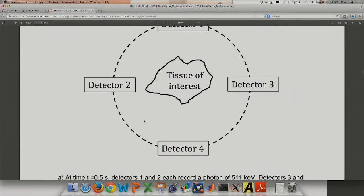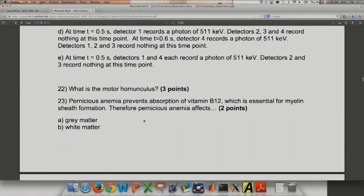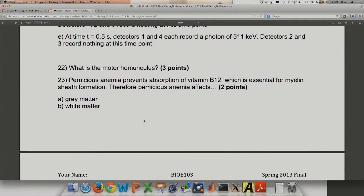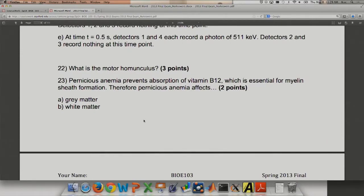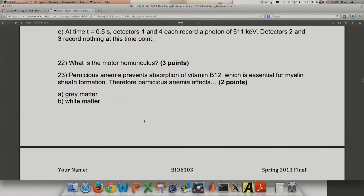What is the motor homunculus? It's the parts of the motor cortex, the organization in the motor cortex corresponds to different areas of the body at different points. So you can, like, the finger maps to a certain area, the leg maps to a certain area, and so forth.